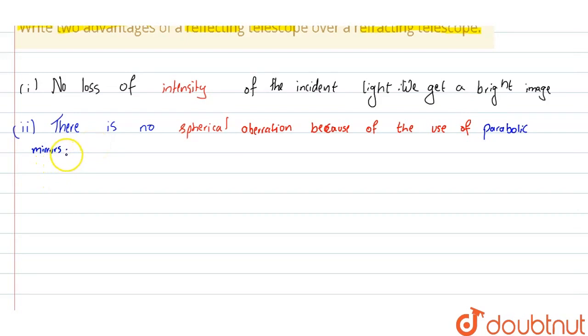These are the two advantages. But if you want, we can write another advantage which is cost effectiveness. Reflecting mirrors are usually cheaper than refracting lenses. If you want, that's the third point we can add. With this we can conclude our answer.